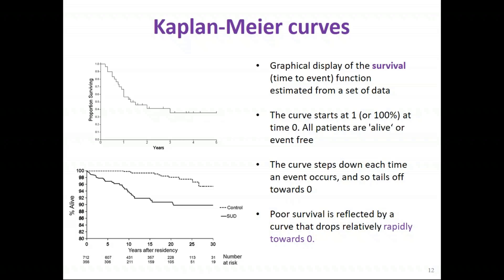The curve steps down each time an event occurs and tails off towards zero. Poorer survival is reflected by a curve that drops more steeply. We can look at the shape of these curves to make inferences about patient prognosis. On the top curve, you'll notice little tick marks indicating where censoring has occurred — those are censored observations.